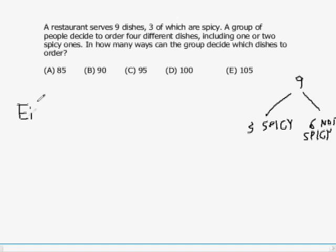So here we have either one spicy or two spicy. This is an either or proposition. And so what we need to do is find out how many ways they can order one spicy dish and how many ways they can order two spicy dishes.